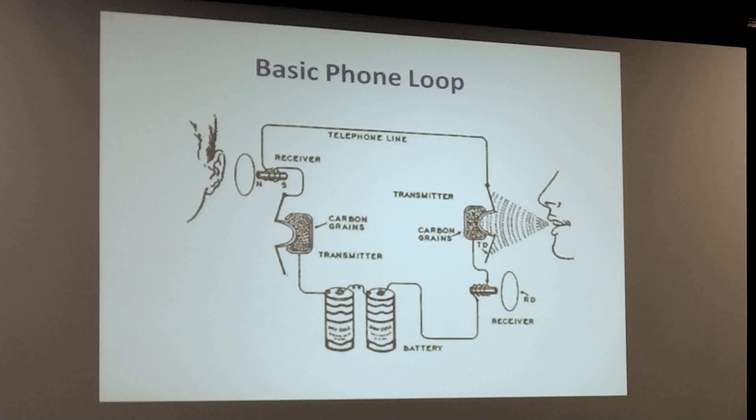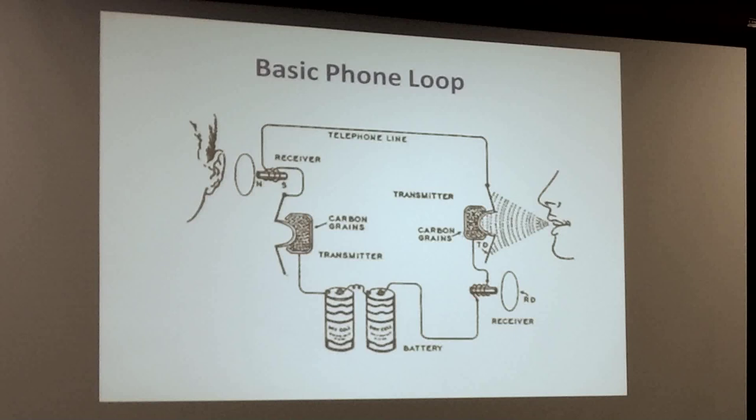This loop has no amplifier — no electronics whatsoever. There's so much output from the carbon microphone that you can drive a telephone call 20, 30, or 40 miles without any amplification at all. That was a big deal, because this was used before electronics was invented, and it had to work that way.